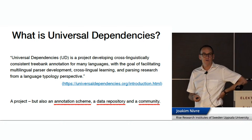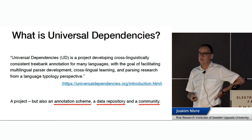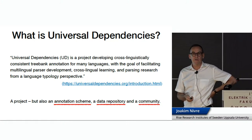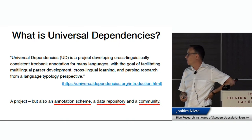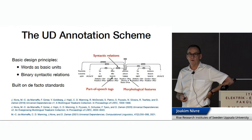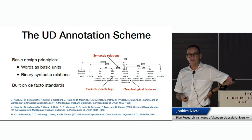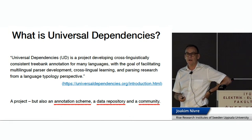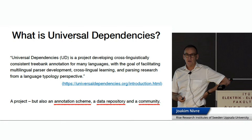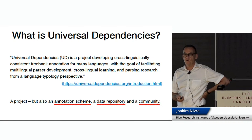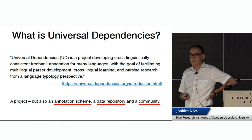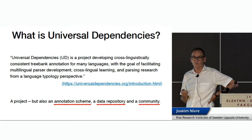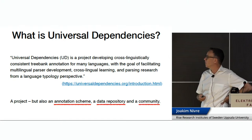I think this is a fairly accurate description of the project, at least at the time when it started. But over the 10 years, it has evolved in various ways. Today it's more than a project — it's also an annotation scheme, a data repository, and I would argue by now a kind of research community. I intend to touch upon all three aspects in the talk, beginning with a brief introduction of each, and then returning to each in more detail.